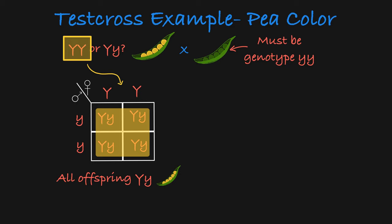In this case, we know that every offspring must have one dominant allele and that dominant allele must have come from this parent. If this parent can only give dominant alleles to its offspring, it must be homozygous dominant.